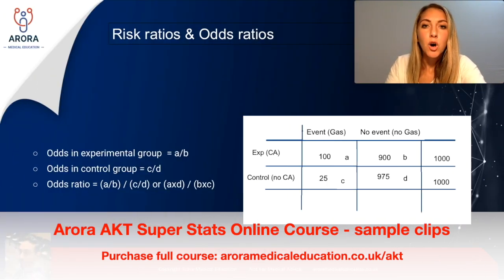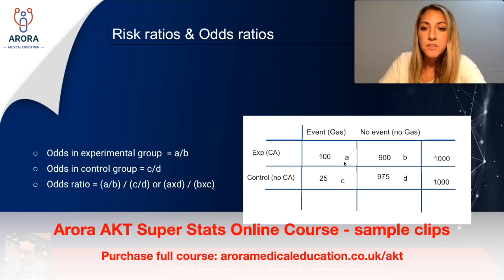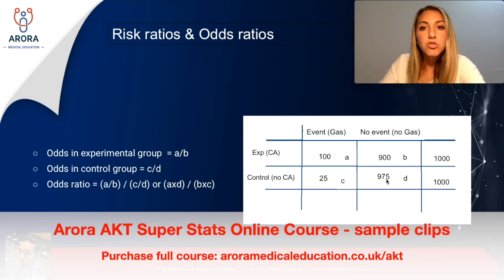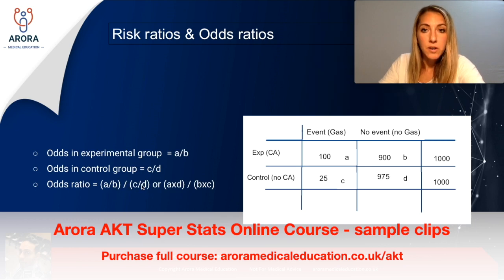We look at the odds of being exposed to the gas in the cases and in the control group. For those with lung cancer, the odds of being exposed is A divided by B — 100 divided by 900. For those without lung cancer, the odds of being exposed are C divided by D — 25 divided by 975. The odds ratio is then the odds in the experimental group divided by the odds in the control group: A/B divided by C/D.